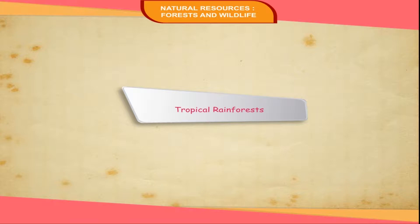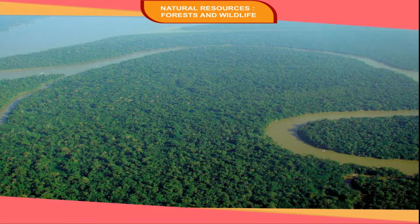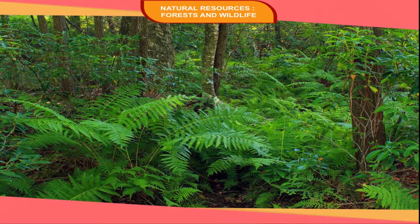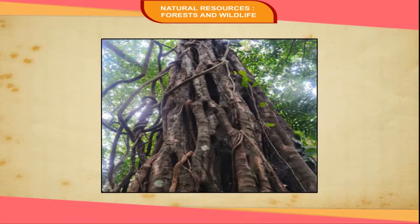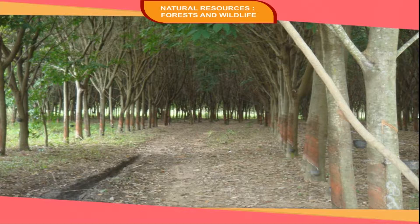Tropical rainforests are evergreen forests found in areas of high rainfall, like the Western Ghats and northeastern states. These forests are very thick and tall and consist of valuable species of plants like teak, ebony, bamboo, sandalwood, rosewood, and rubber.